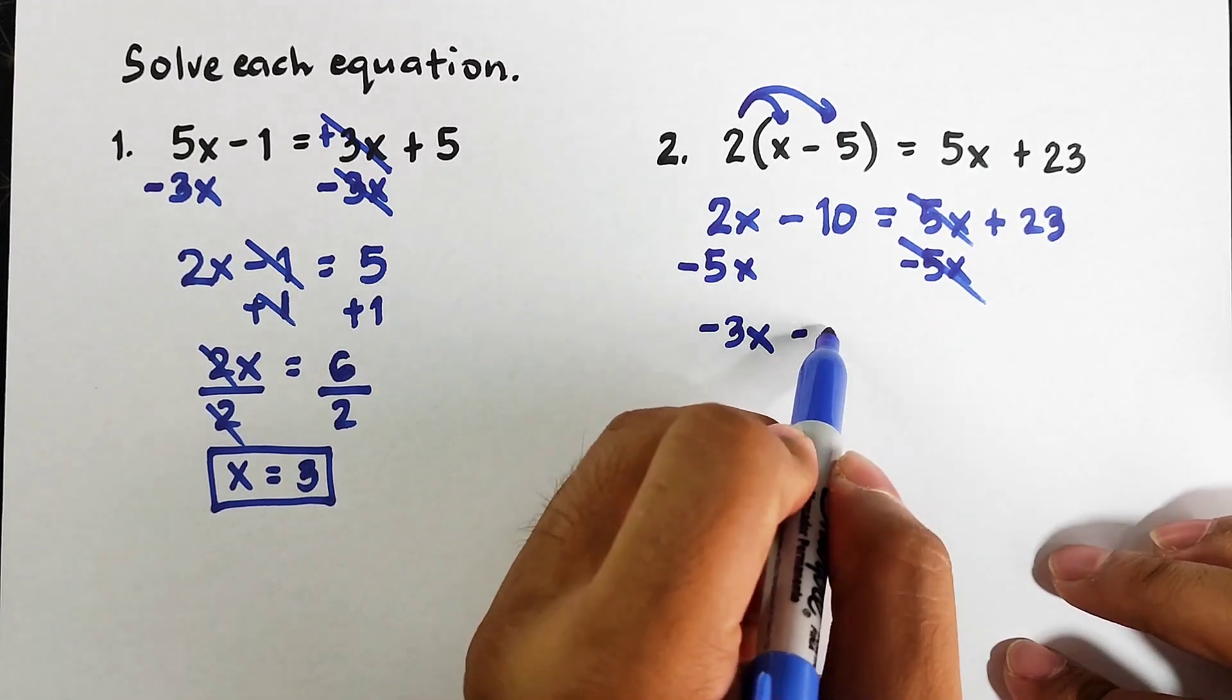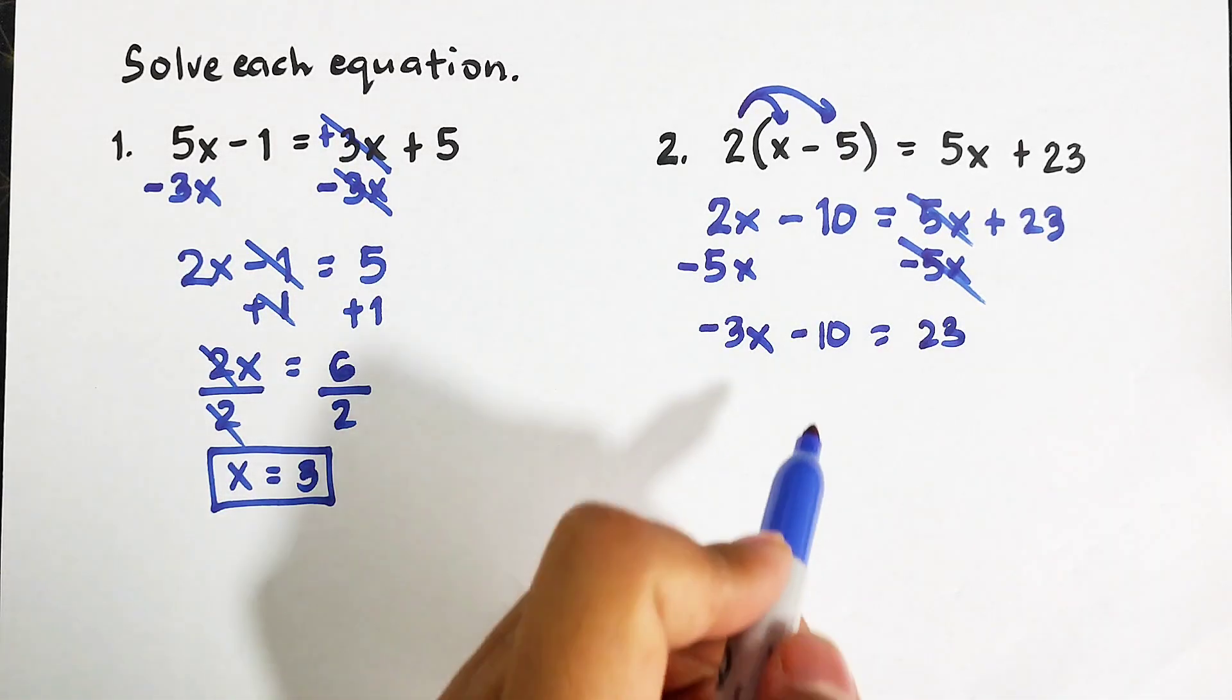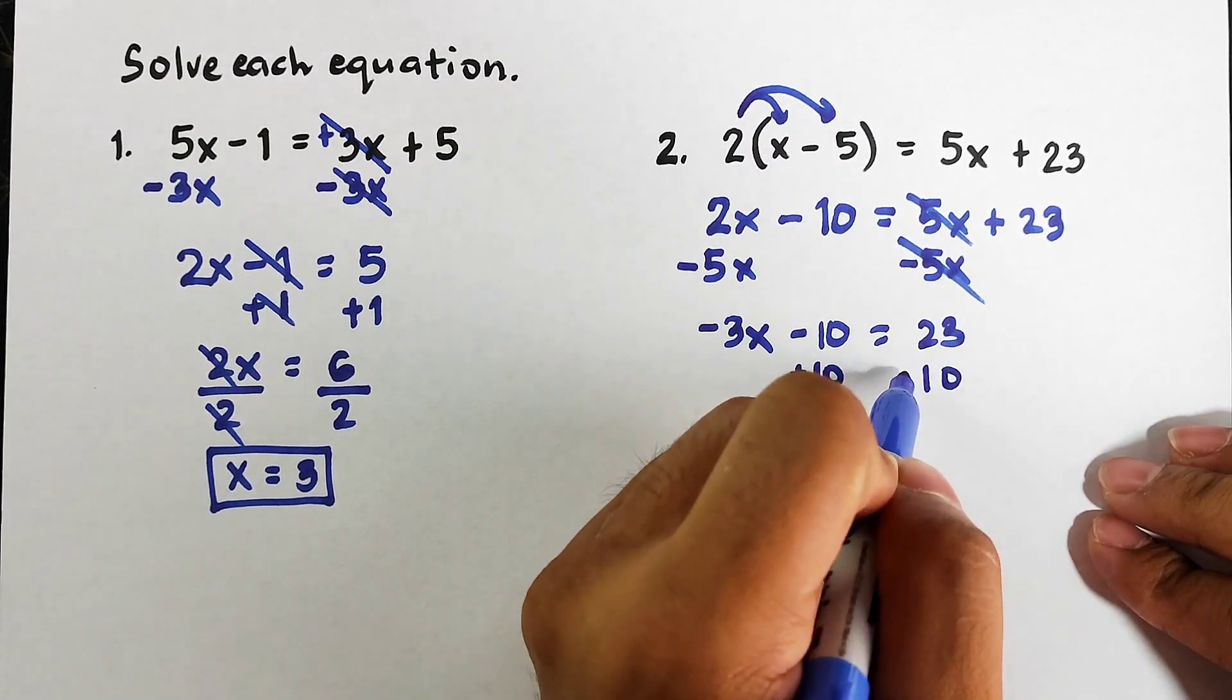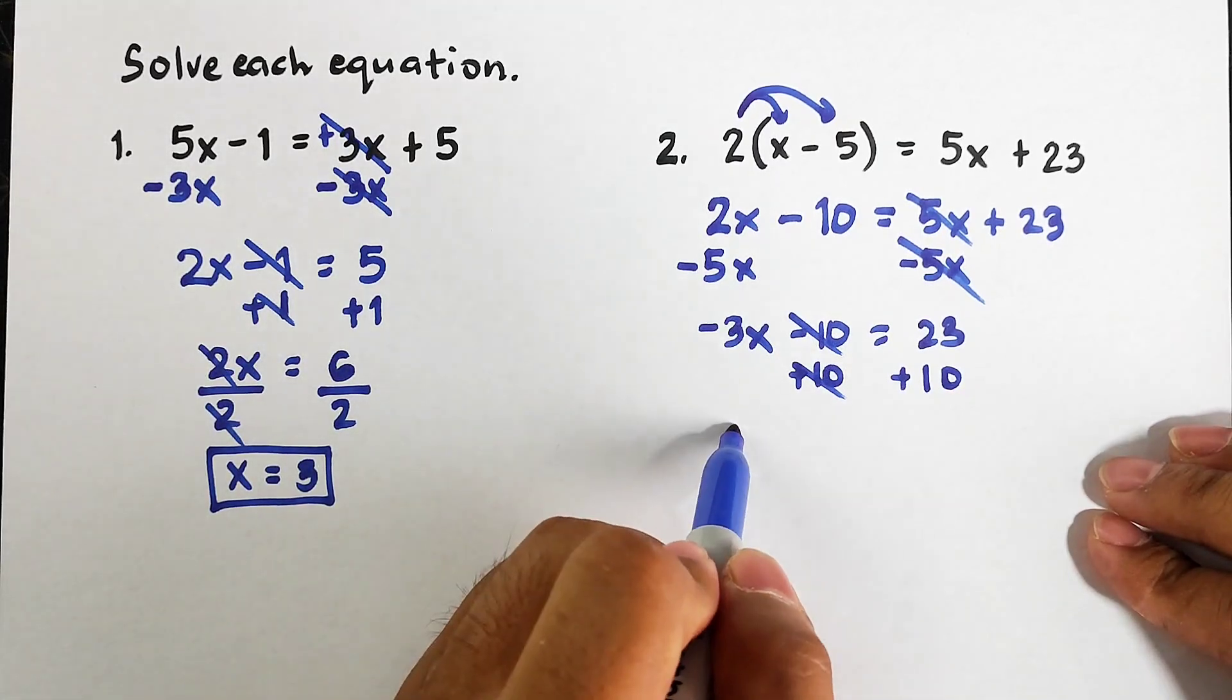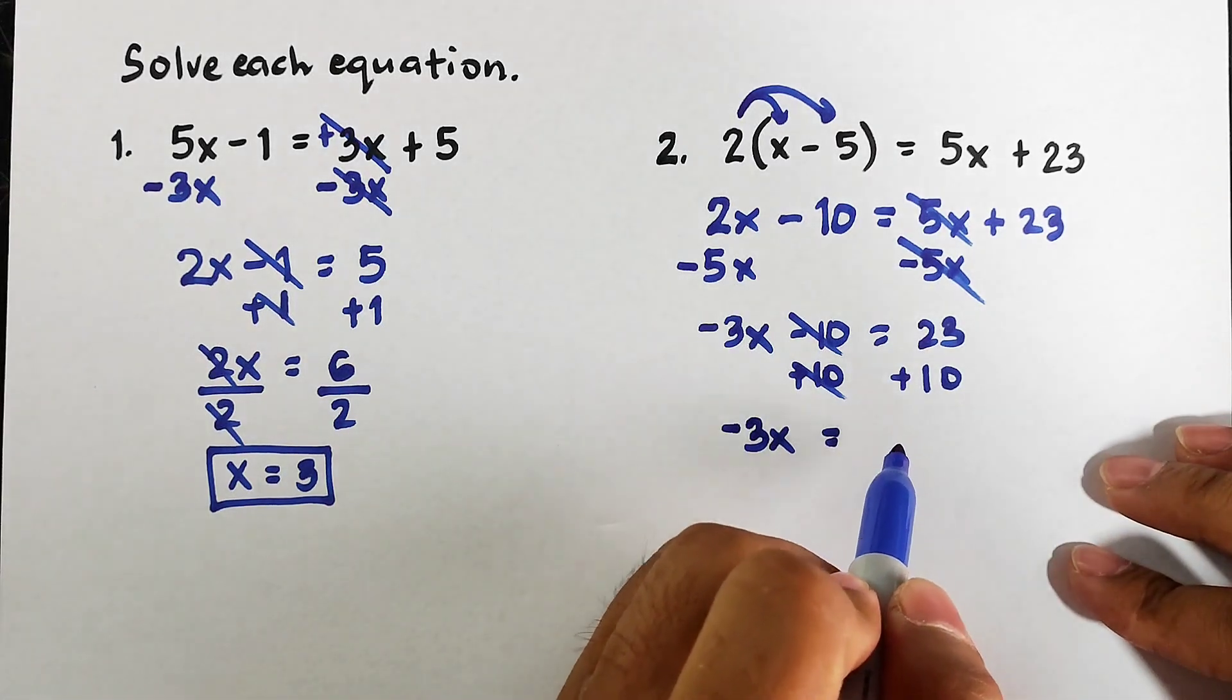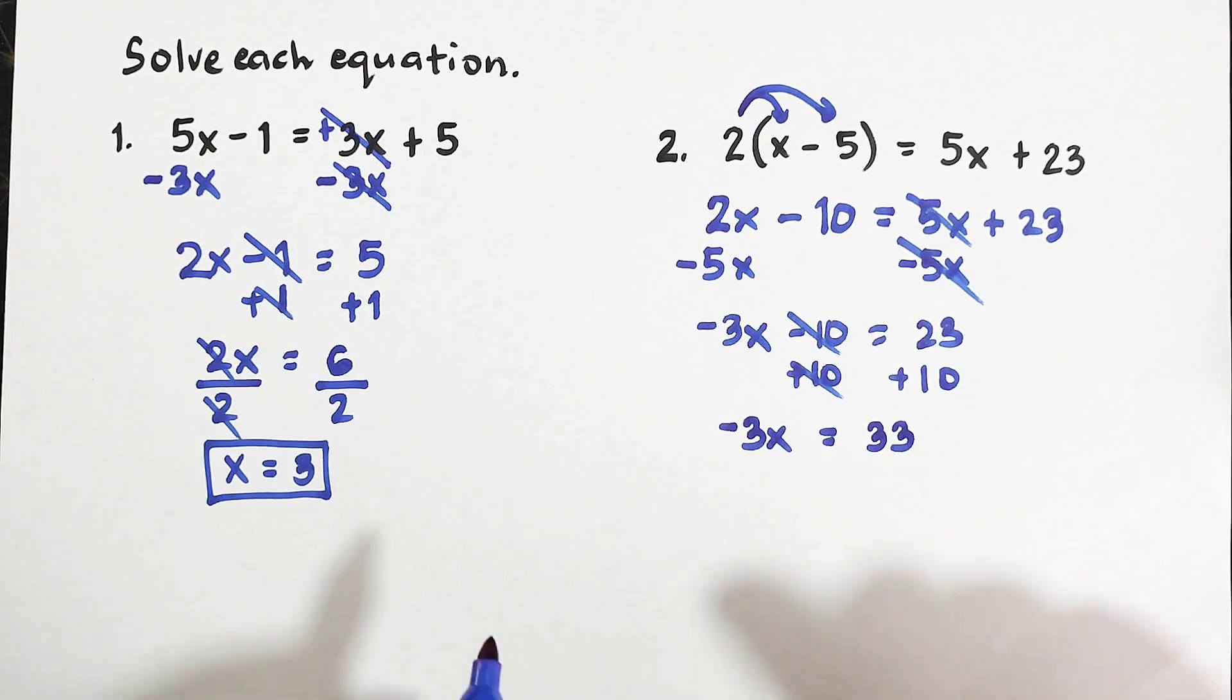Then minus 10 is equal to 23. Now this is minus 10, we need to add both sides of the equation by 10 to eliminate negative 10. This is zero, cancel. We have negative 3x is equal to 23 + 10, and that is 33.